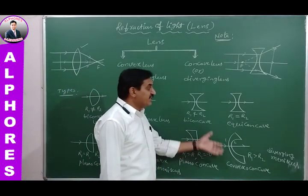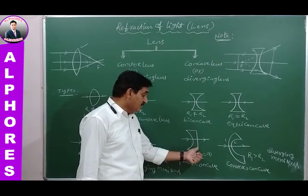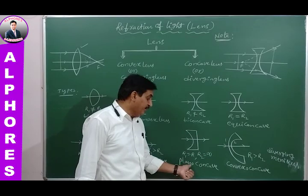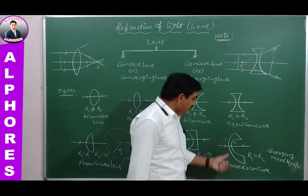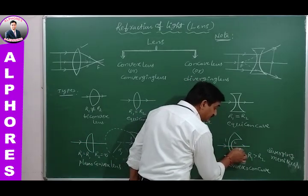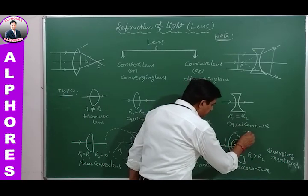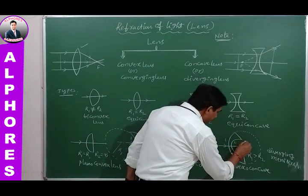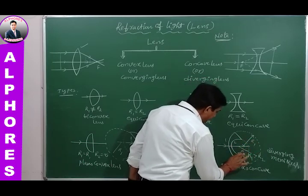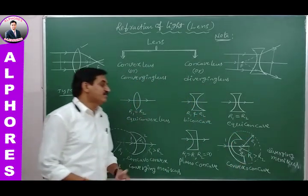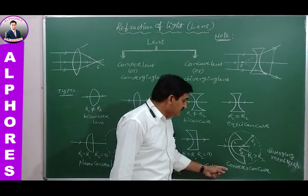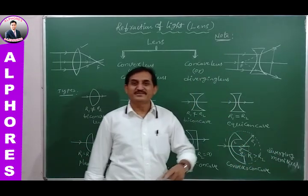Similarly, for the convexo-concave (diverging meniscus) lens: the outer convex surface has R₁ greater than the inner concave surface R₂. The convex surface has the greater radius of curvature, so it is named first — giving the name convexo-concave, also known as diverging meniscus.